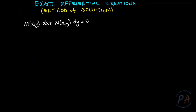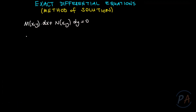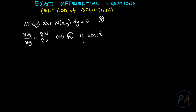Hi everyone, today we are going to learn how to solve exact differential equations. We have a given differential equation in the form M(x,y)dx + N(x,y)dy = 0. First, we have to be sure that this equation is exact or not. We will use the exactness condition: the partial derivative of M with respect to y must equal the partial derivative of N with respect to x. If this condition is satisfied, then the equation is exact.